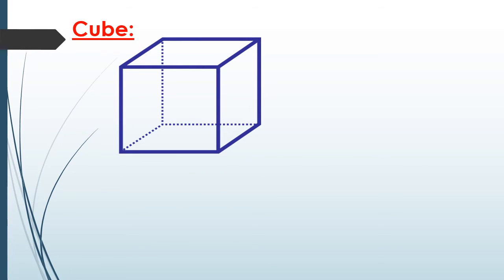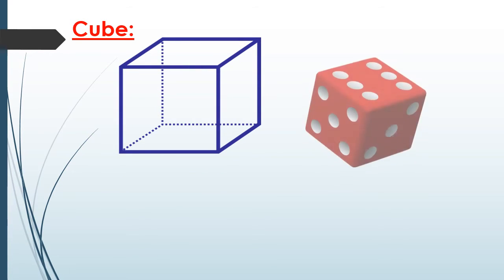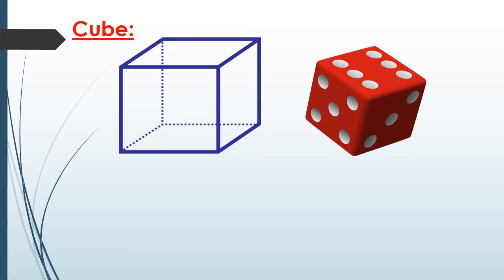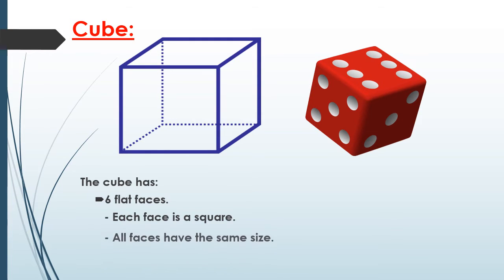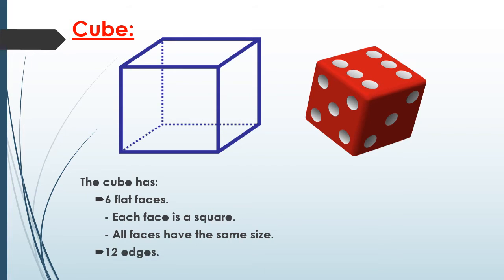The first shape is the cube. In real life, it will be like the dice. This cube has six flat faces; each face is a square and all faces have the same size. It has 12 edges and 8 vertices.